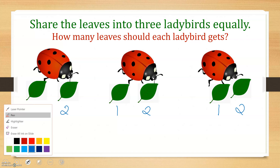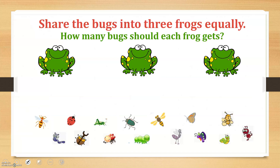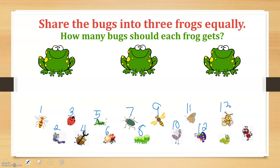Share the bugs into three frogs equally. How many bugs should each frog get? Let's count how many bugs there are: one, two, three, four, five, six, seven, eight, nine, ten, eleven, twelve, thirteen, fourteen, fifteen bugs.